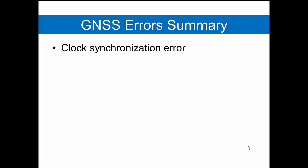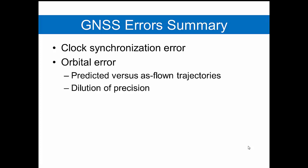So beyond clock synchronization error with GNSS systems, we need to understand orbital error—that is, the difference between predicted trajectories and as-flown trajectories. Further, the dilution of precision is a predictor of expected positional quality.